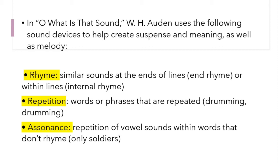Rhyme: similar sounds at the ends of lines. And rhyme within lines: internal rhyme. Repetition: words or phrases that are repeated — for example, 'drumming, drumming.' Assonance: repetition of vowel sounds within words that don't rhyme — for example, 'only soldiers.'